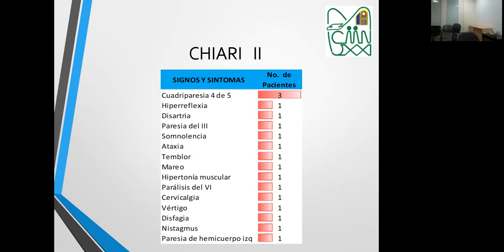Cuatro de cinco tuvieron cuadriparesia. También se presentó hiperreflexia, disartria, paresia del tercer nervio —que pensamos tiene que ver más con el diencéfalo y las malformaciones del mesencéfalo—, somnolencia, ataxia, temblor, mareo, hipertonía muscular, paresia del sexto par, cervicalgia —que le daría un punto muy importante—, vértigo, disfagia y paresia del hemicuerpo izquierdo.